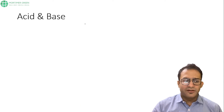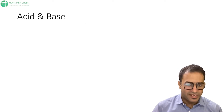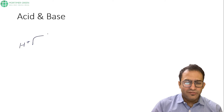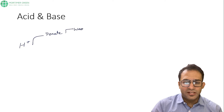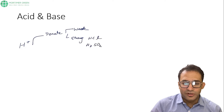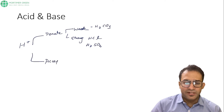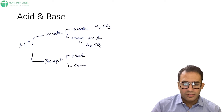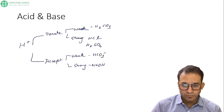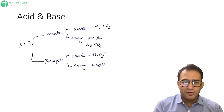Deep diving into the topic, we have to understand what is an acid and what is a base. An acid is anything which can donate a hydrogen ion — this can be a weak acid or a strong acid. Strong acids are HCl and sulfuric acid. Weak acids include carbonic acid, which is very important to our concept. A base is anything which can accept a hydrogen ion. NaOH is a strong base, and the bicarbonate ion is a weak base.